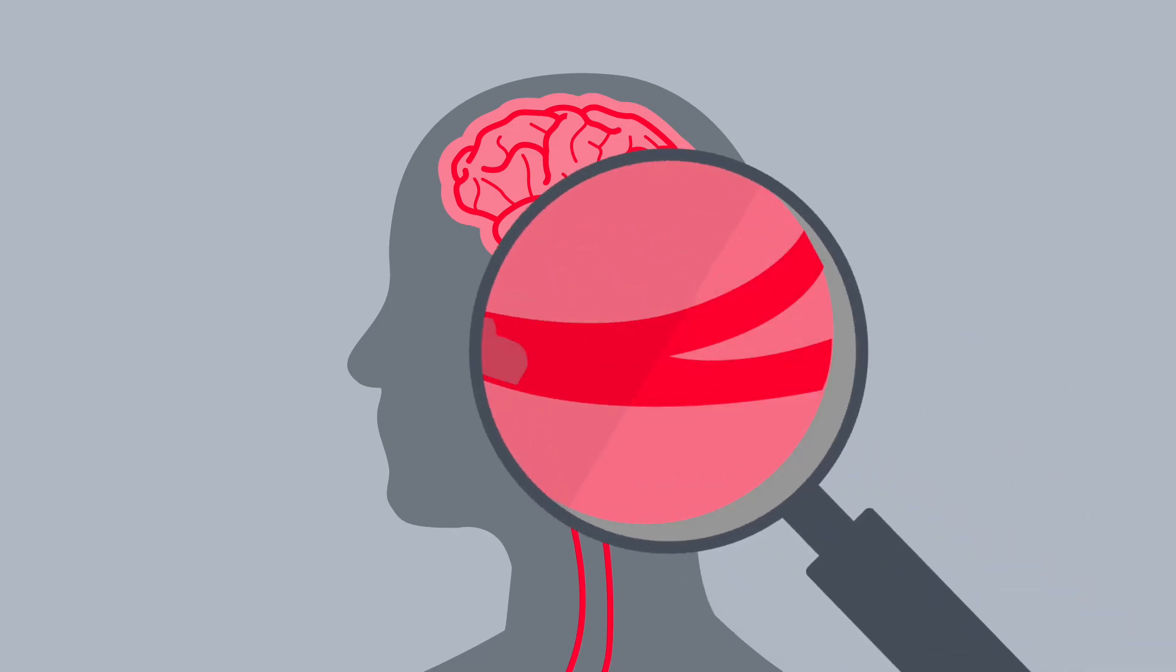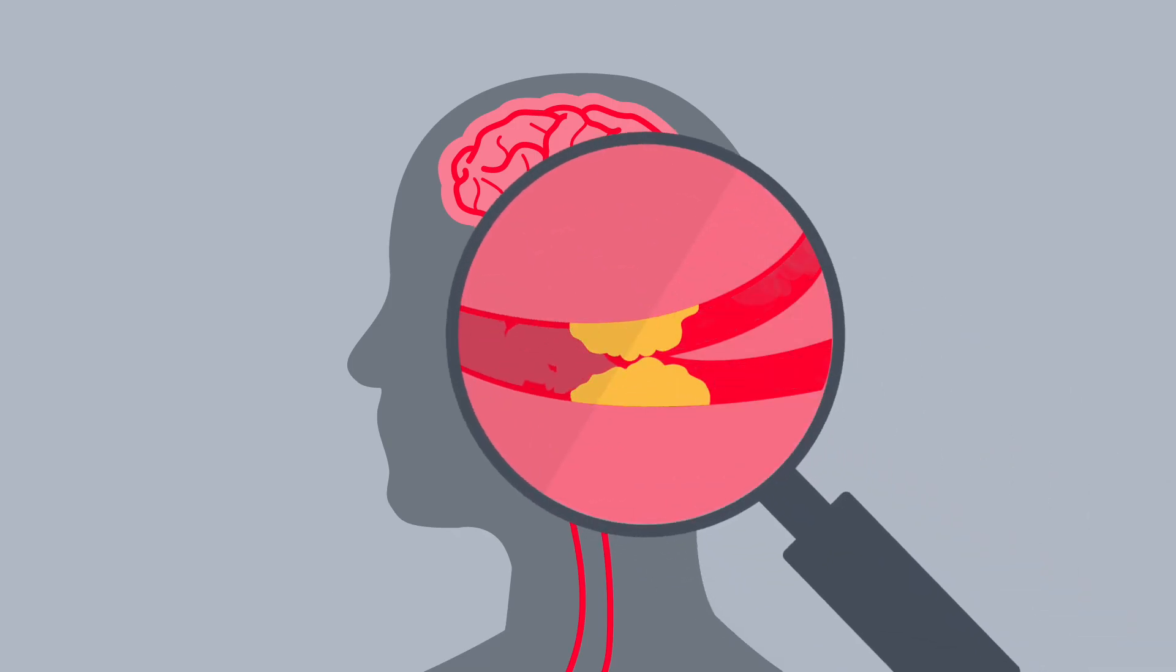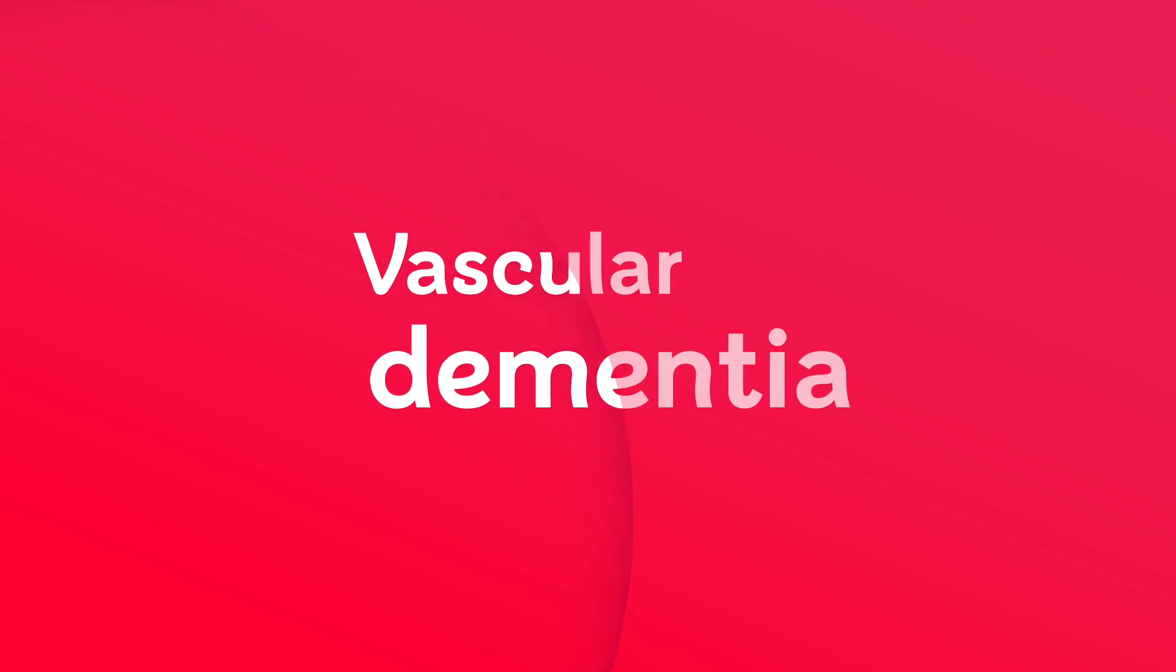But if blood can't get to your brain because blood vessels are damaged or blocked, or if blood leaks into the brain, your brain cells can die. This can lead to vascular dementia.